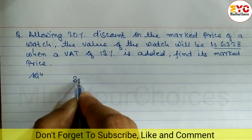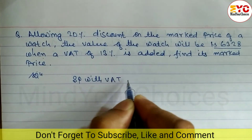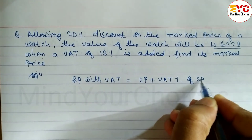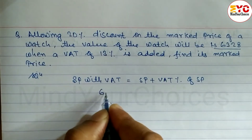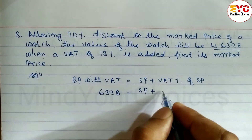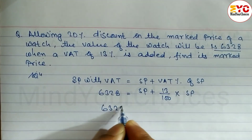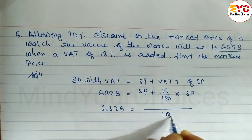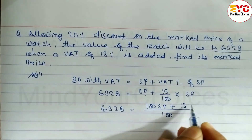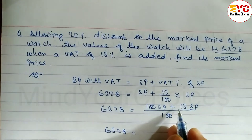Let's start with a simple approach. We use the SP with VAT formula directly. The formula is: SP with VAT equals SP plus BAT percent of SP. We can see that 6,328 is equal to SP. So we write 13% BAT, which means 13 divided by 100 into SP. So 6,328 is equal to - take LCM here, LCM is 100 - 100 SP plus 13 SP.